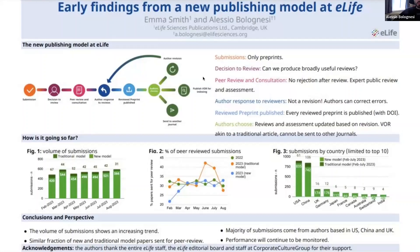The peer review is consultative, where reviewers and editors get together to agree on their feedback to the authors, and authors have the chance to correct factual errors in the public reviews and the public assessment before we publish them. After this, we publish the review preprint, which is citable with a DOI. At this stage — the light green in the diagram — it's the authors who decide what they want to do. They can take the review preprint and publish it in another journal, call that review preprint version one or following versions of a review preprint version of record (VOR), which is akin to a traditional journal article which cannot be published in other journals. Or they can revise according to the recommendations from the reviewers, at which point we'll consider the revisions and update the public review and public assessment accordingly. The idea of this model is to really shift research and science assessment from assessing based on where the research is published to what is actually published.